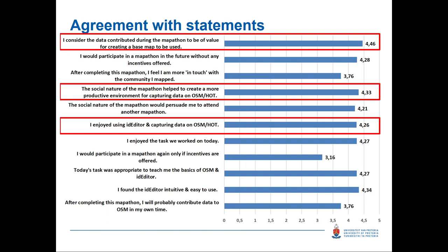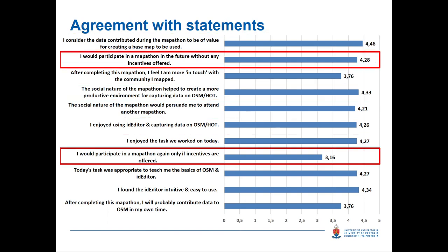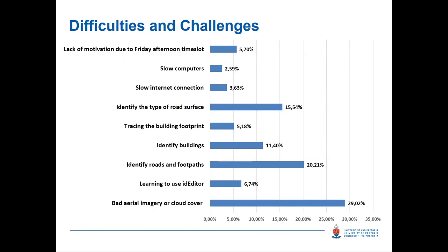We thought maybe students were just saying what we wanted to hear, so we decided to use two different questions that asked the same thing in different ways. We said 'I would participate in a mapathon in the future without any incentives' — and we did offer incentives such as extra credits, free lunch, or pizza to attract them. A lot of them said yes, they'd contribute without incentives. But when asked 'I'd participate only if incentives are offered,' they were very neutral — not the complete opposite result I was expecting.